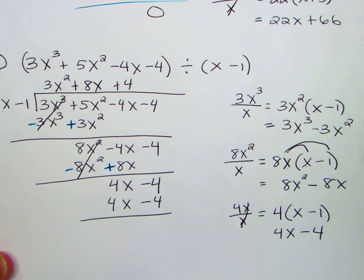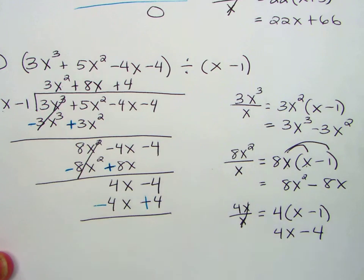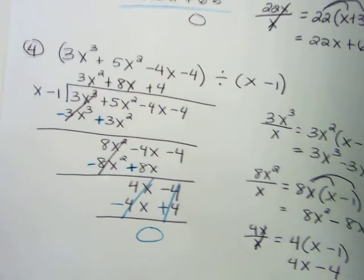Change the sign of the bottom, 4x minus 4x cancels, negative 4 and 4 cancels, you get zero. All right, that was number 4.